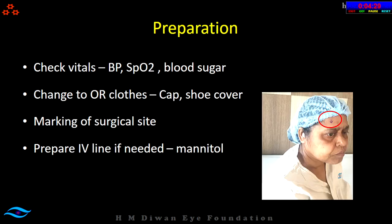Ensure a cardiac monitor and pulse oximeter are in place. Once blood pressure, sugars, and other parameters have been checked and cleared, ask the patient to shift into OR clothes, wearing a cap so all hair is covered, and shoe covers. Then go ahead with marking of the site — the nurse should ask the patient which eye the surgery is planned for before marking. Some elderly patients may need an IV line prepared, and some would need Mannitol — remember to ask the patient to use the restroom before shifting into the OR.